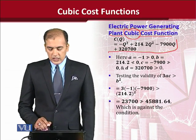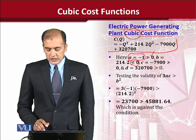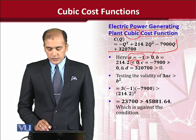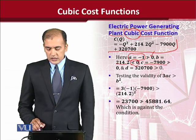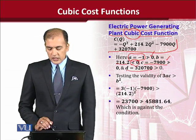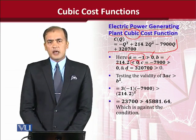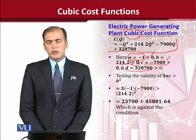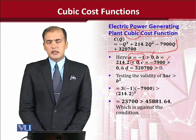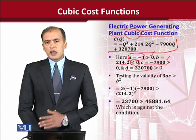If we observe this cubic function, the value of a is not positive — it is minus 1; the value of b is not negative, rather it is positive; the value of c is not positive, rather it is negative; and the value of d is however positive. Comparing these values with the desired set of parametric restrictions, where only the coefficient of the square term was negative and the remaining were positive, we see a violation.